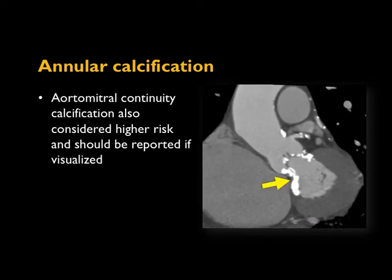Aorta-mitral continuity calcification — the calcium in the piece of anatomy between the aortic valve and mitral valve — is also associated with a higher risk of rupture, so we report it when we see it and advise caution.